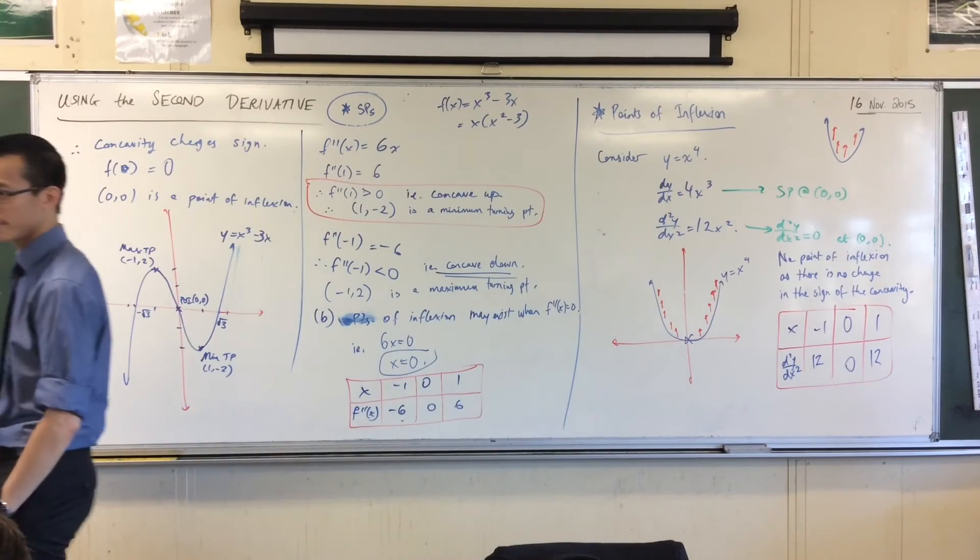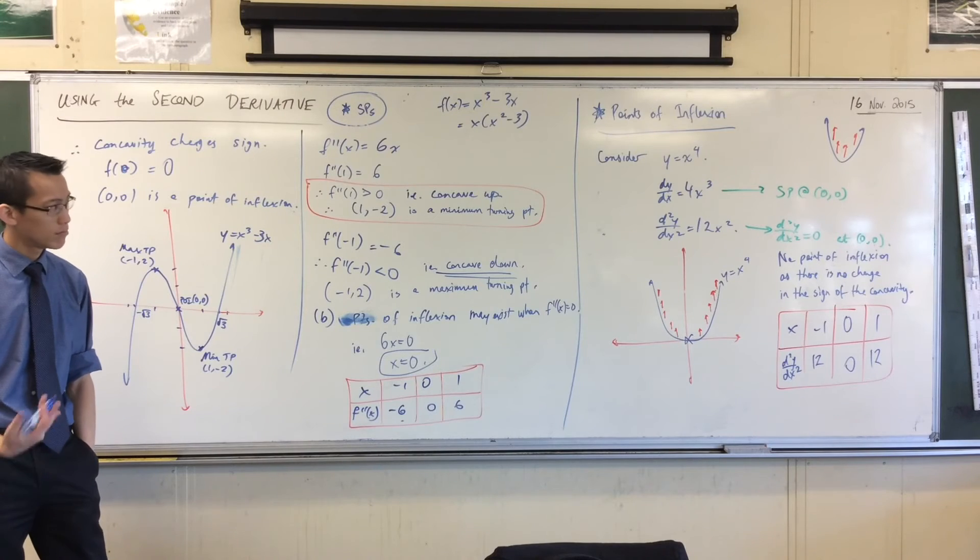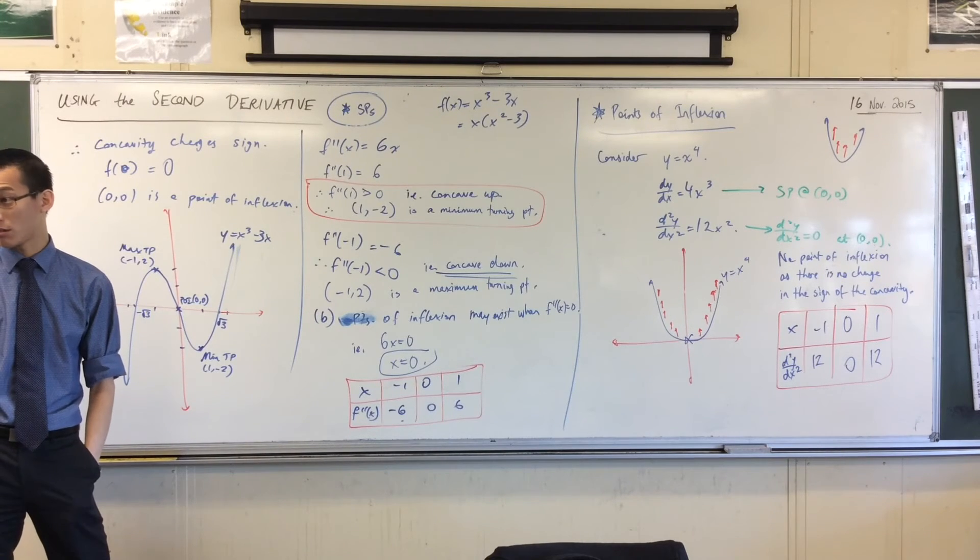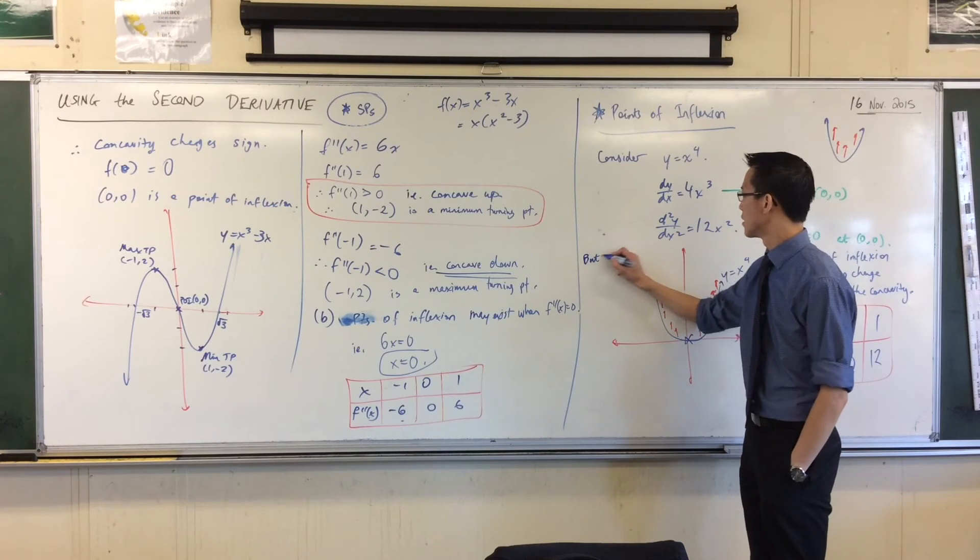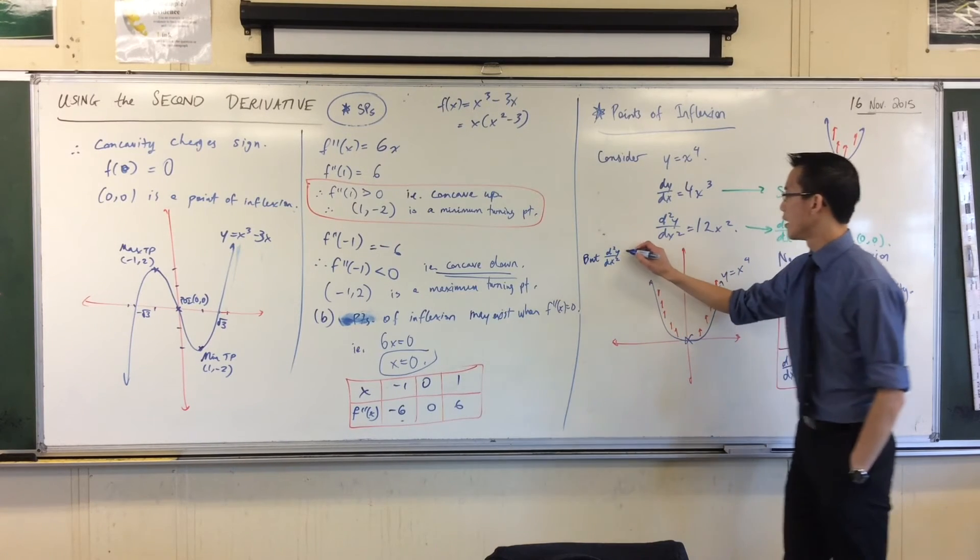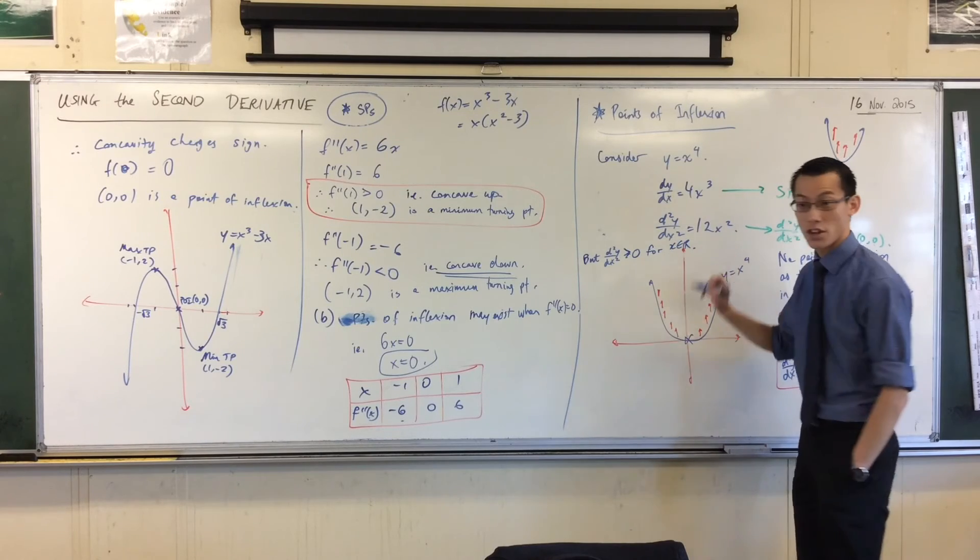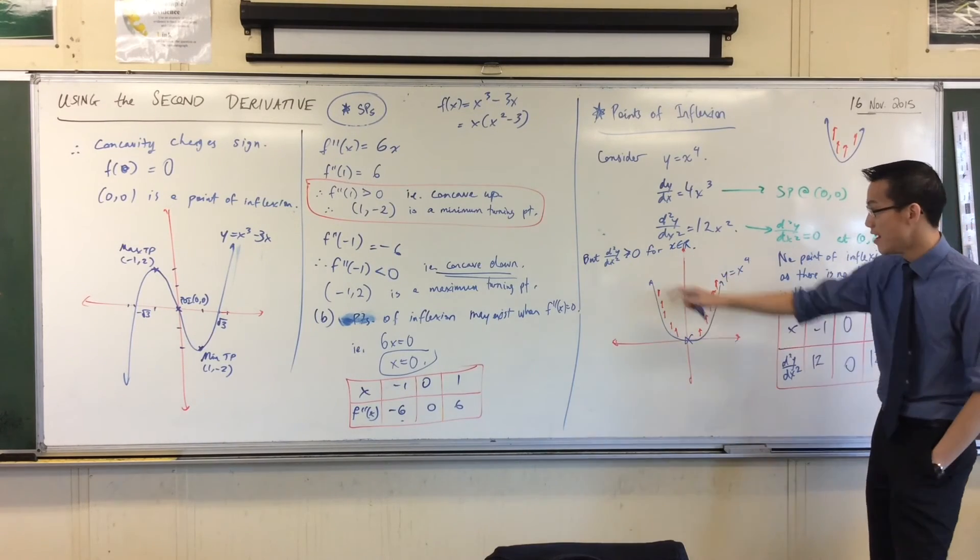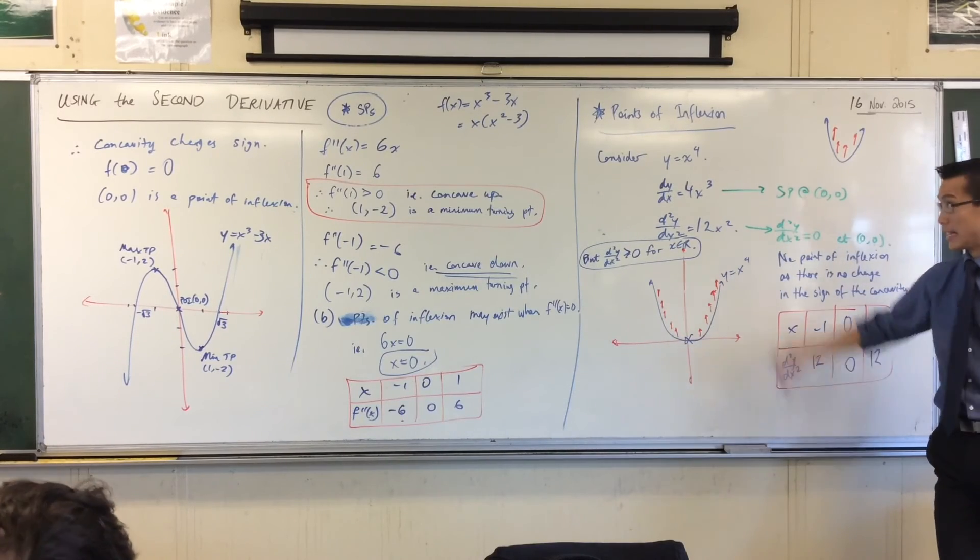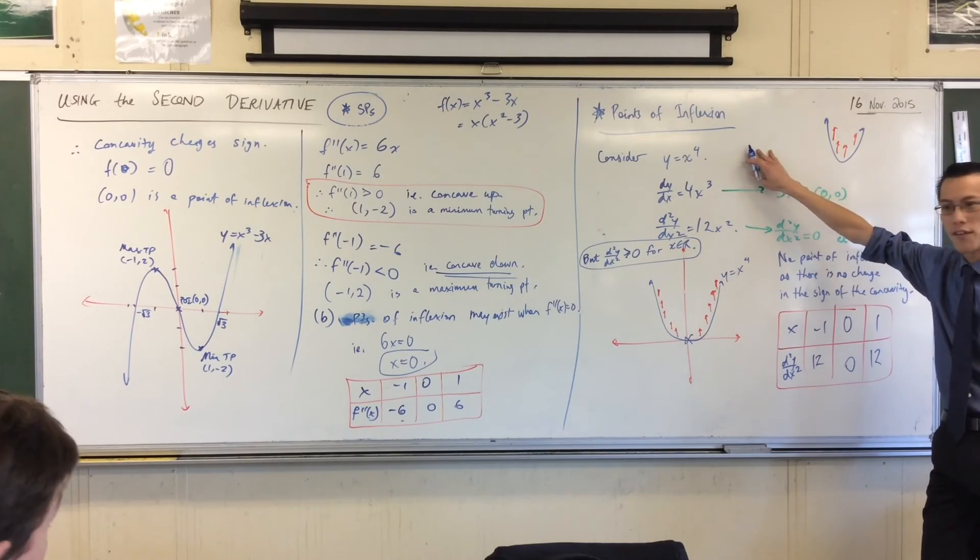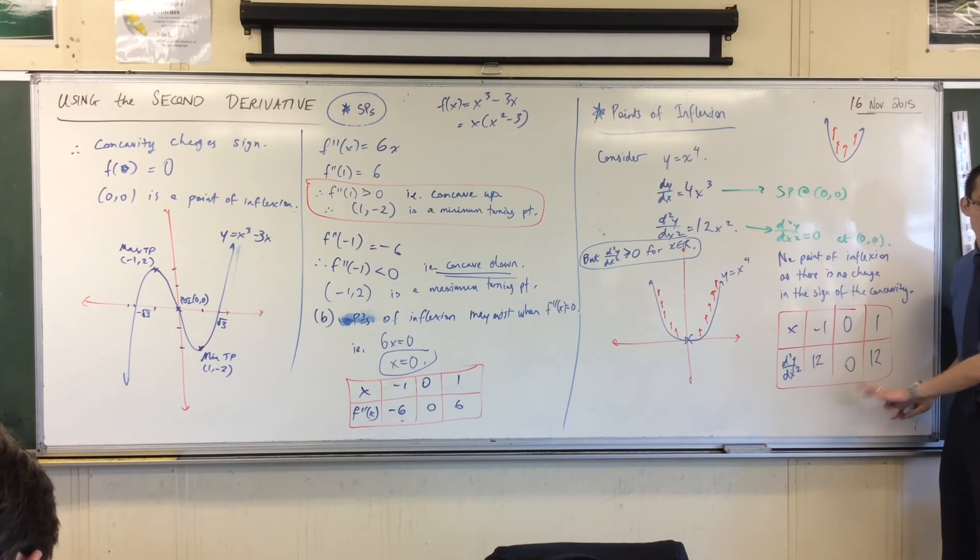So can you just make the argument straight from the fact that the second derivative has an x squared, meaning that it's always greater than zero? In this particular example, yes, you could. So what Raf is talking about is I could say, from this line, d²y/dx² is greater than or equal to zero for all values of x in the domain. Therefore, it can't possibly have a change in sign because it will never go negative. That's a possibility. But I'm not going to teach you that as an approach because this is pretty much the only example where it works.